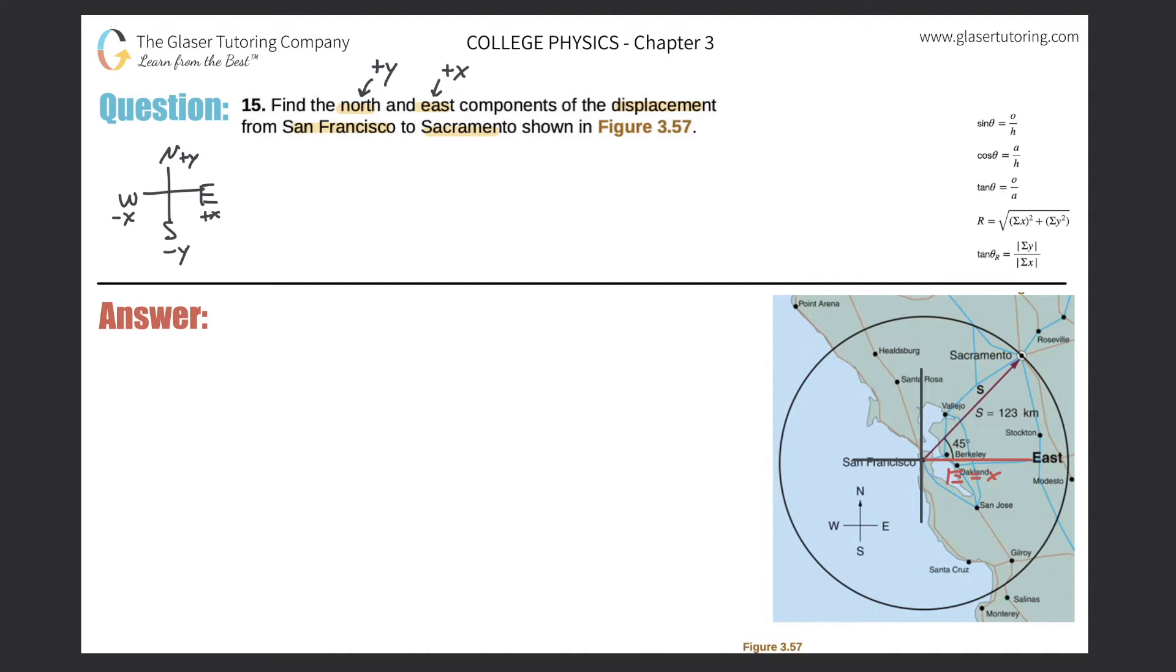The north component, aka the positive y component, would now be this vector here. So now that value would be the north component, aka the y component.